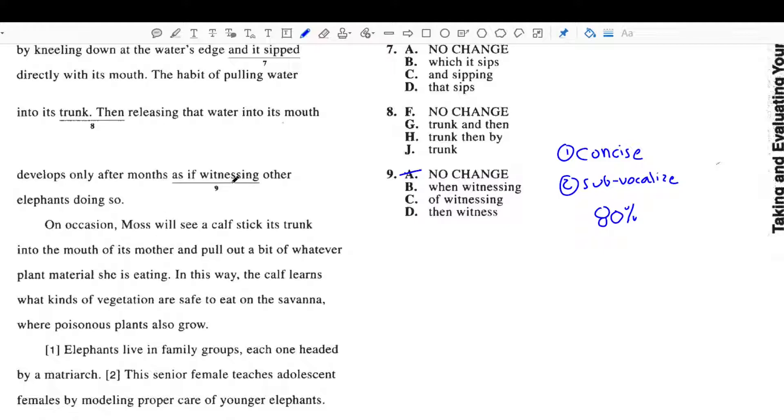So, if it's not obvious to you what the answer is, then you're going to want to start with the one that you think is the most jarring and get rid of that one, which should be D. Then witness other elephants doing so. That's even hard to say, and we're not really sure what they mean by that. So, D would be out, and we would be left with B and C.